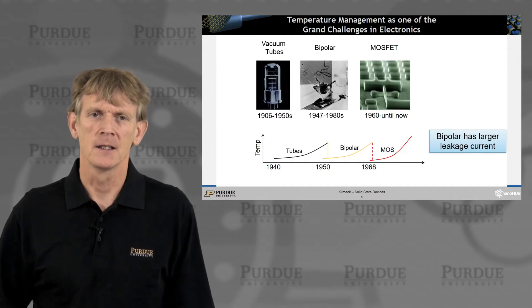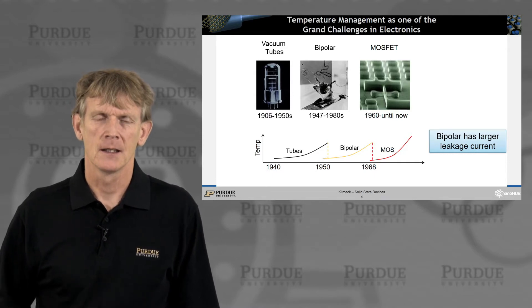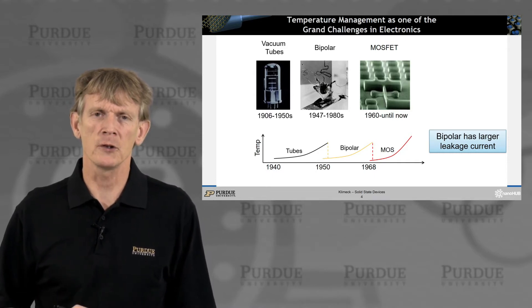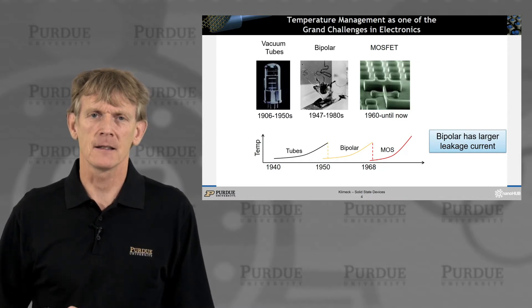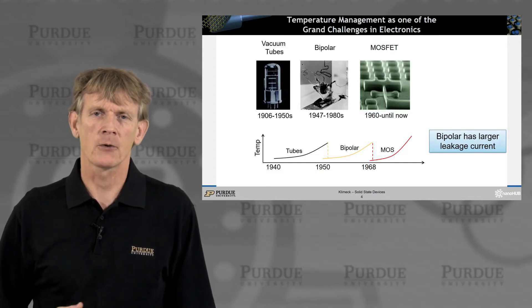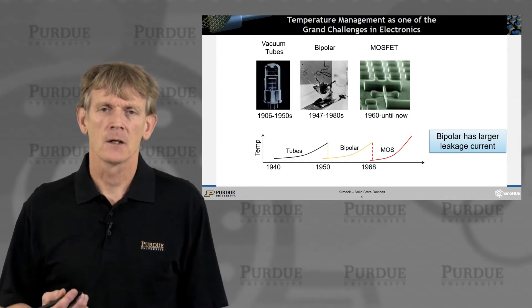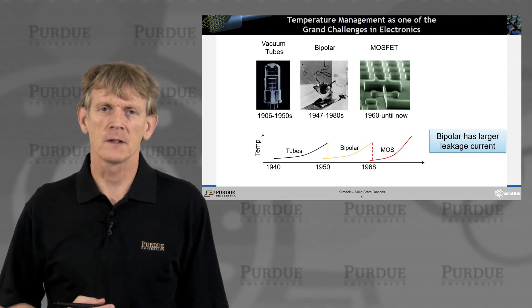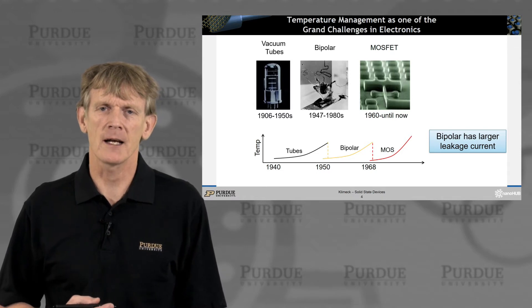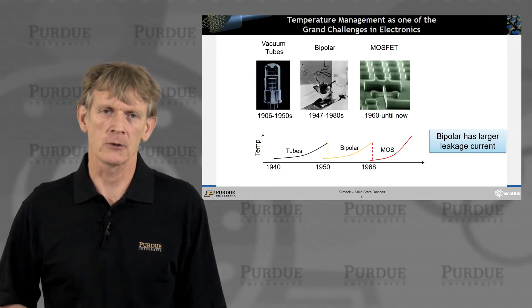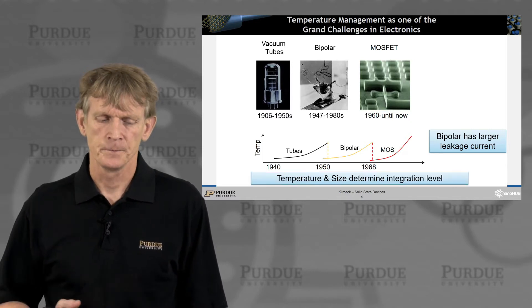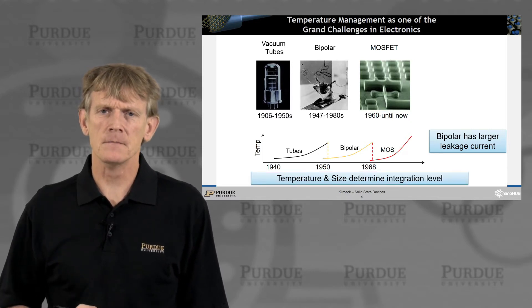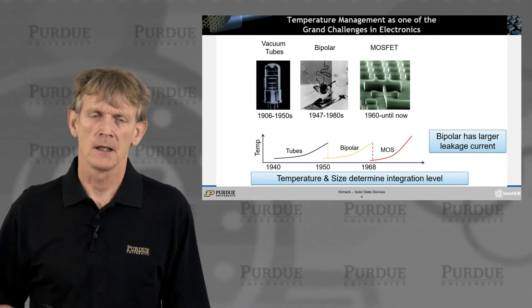Vacuum tube computers required a whole room, got really hot, and couldn't be integrated very densely. Temperature was a critical element. Same with bipolar — they were consuming too much power compared to MOS devices. And today we are at MOS devices, which are at the limit of being unable to reduce power consumption further. So really temperature and size determine the integration level of what you can achieve.